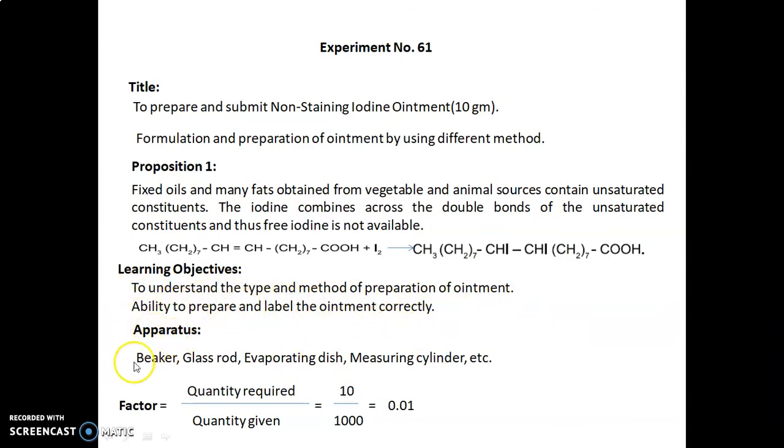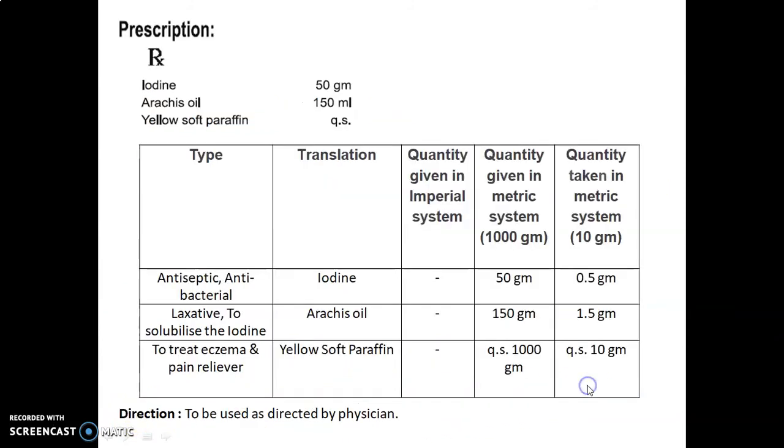Apparatus required are beaker, glass rod, evaporating dish, measuring cylinder, etc. Factor calculated as quantity required upon quantity given equals 10 upon 1000 equals 0.01. Prescription: Rx Iodine 50 grams, Arachis oil 150 ml, Yellow soft paraffin quantity sufficient.